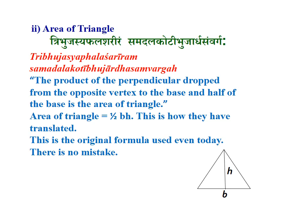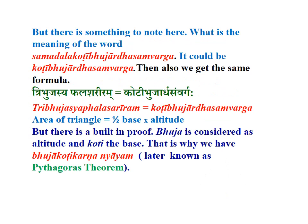Second, the area of a triangle. The sutra: 'Tribhujasya bhala shariram samadala kodi bhujardha samvarga.' The product of the perpendicular dropped from the opposite vertex to the base and half of the base is the area of a triangle. That is, area of triangle equals half BH. This is how it has been translated — the original formula used even today. There is no mistake.